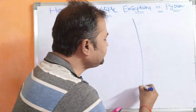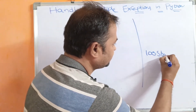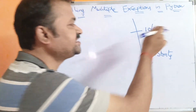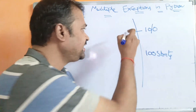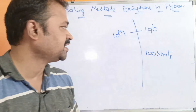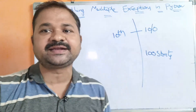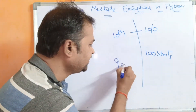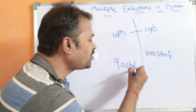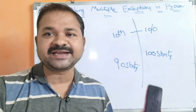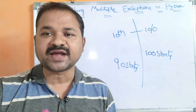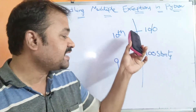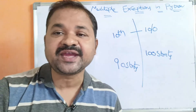Let's say the program contains 100 statements and the 10th statement causes an exception — for example, a division by zero. Whenever an exception occurs at the 10th statement, the remaining 90 statements are not executed and the program gets abnormal termination. Our target is to handle this exception so that the remaining 90 statements should also get executed.